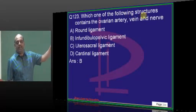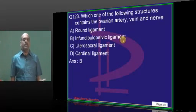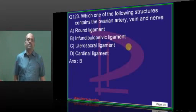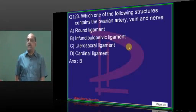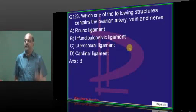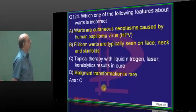In the infundibulopelvic ligament — ovarian artery, vein, and nerve. You must know what the broad ligament does, which are the true supports and not true supports of the uterus — true friend, not a true friend — all those things in gynecology.